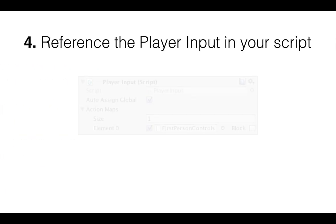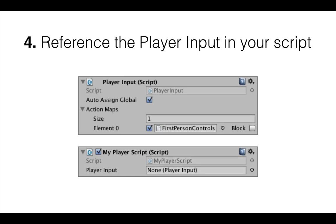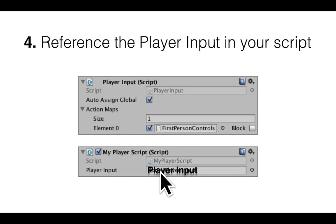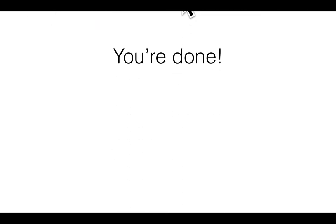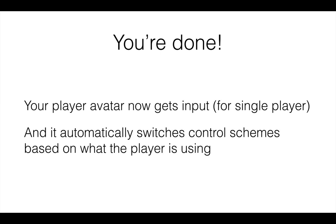The fourth step is that you need to reference the player input in the script you just created. You simply drag the player input component into the player input field in your own script — and that's it, you're done. Now your player avatar gets input for single player games. And if the player switches devices — say they first use mouse and keyboard and then begin using the gamepad — the game automatically switches and shows corresponding prompts.